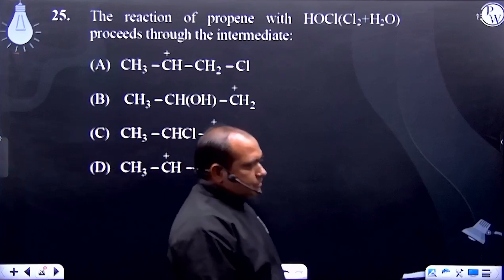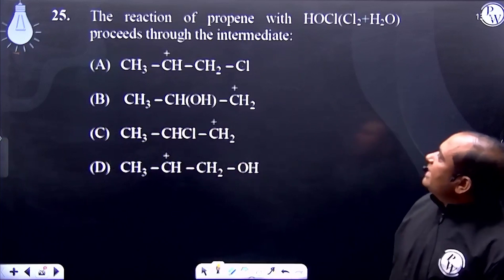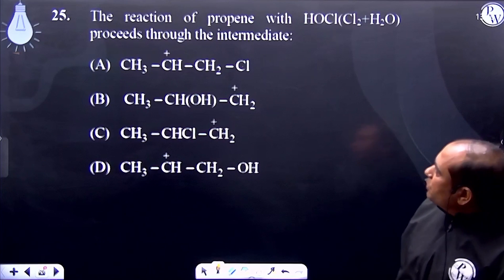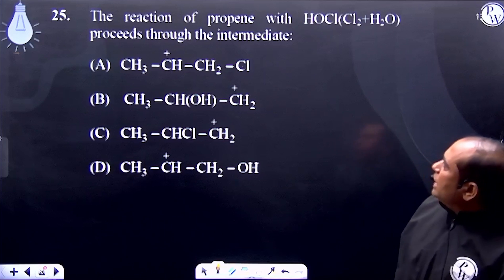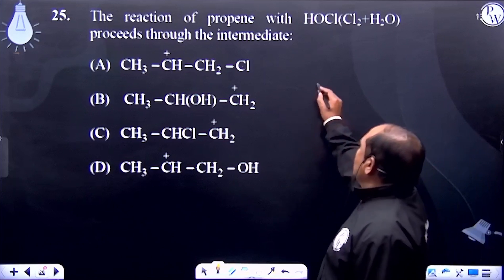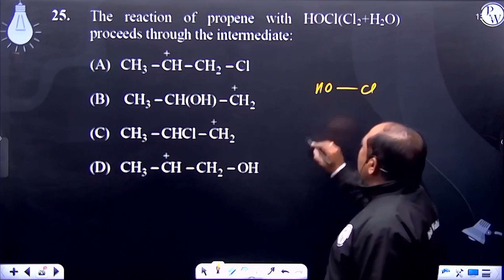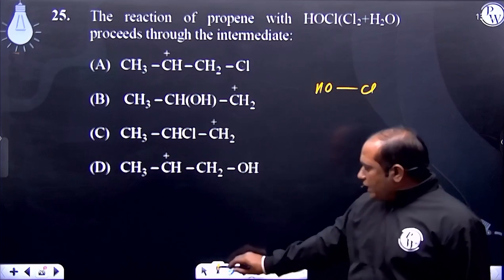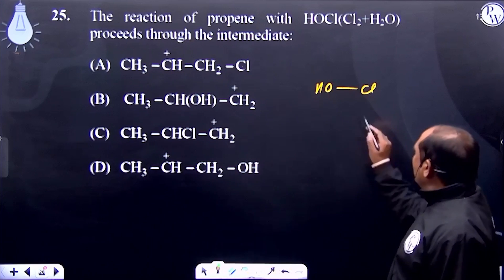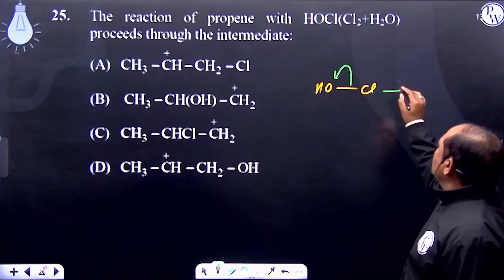Question number 25: the reaction of propene with HOCl proceeds through an intermediate. Looking at HOCl, oxygen has greater electronegativity than chlorine, so after polarization the bond dissociates.